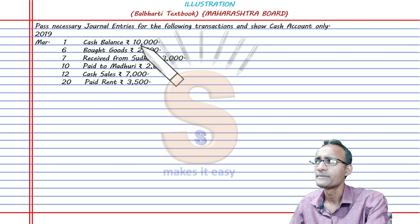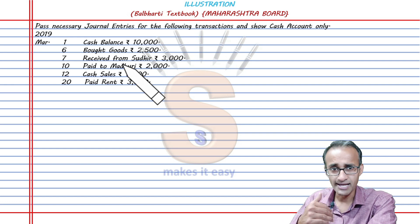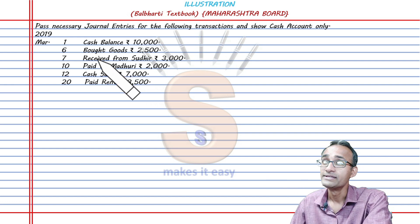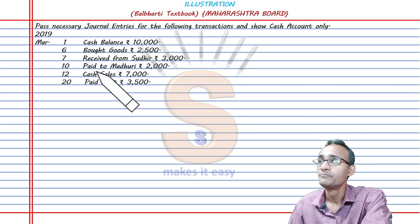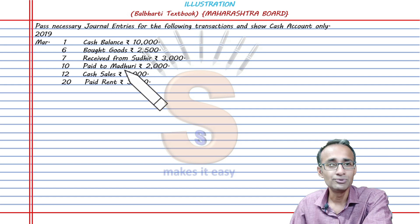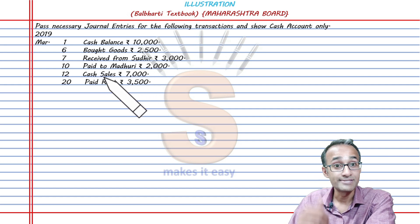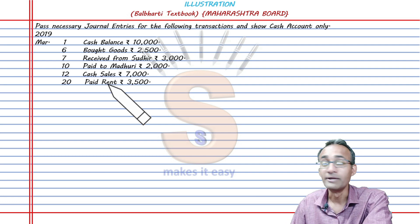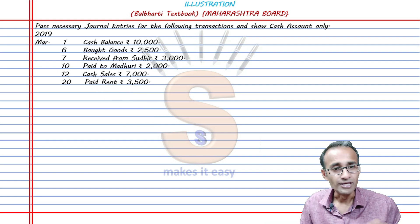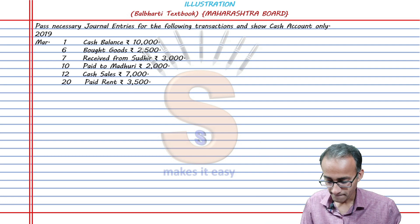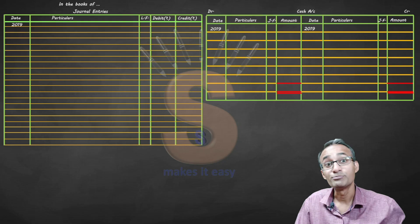The transactions are: bought goods — goods came in, money went out. Received from Sudhir — money came in. Paid to Madhuri — money went out. Cash sales — goods went out, money came in. Paid rent. These journal entries make this problem very, very simple.